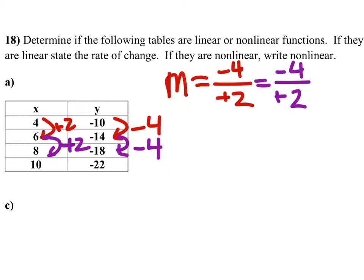So on the next one, negative 18 to negative 22 is down 4. 8 to 10 is adding 2. So these are actually just all the same each time.